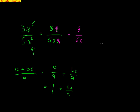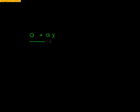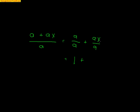Here's a similar one: (A plus AX) over A. Some kids say everything cancels — but you have to treat it part by part. The first A gets divided by A, and the AX also gets divided by A. In the first part, the A's cancel giving 1. In the second part, the A's cancel giving X. So the final answer is 1 plus X. Be careful when breaking apart fractions.